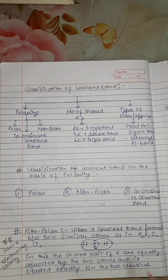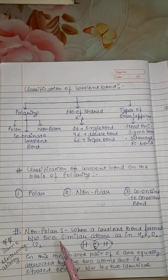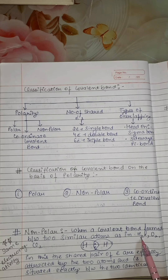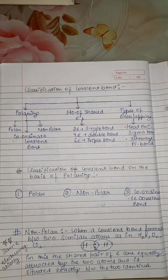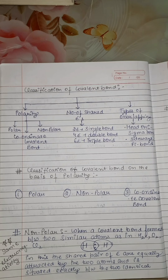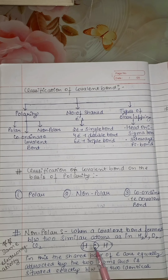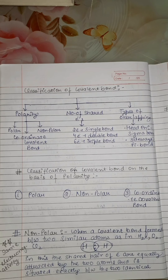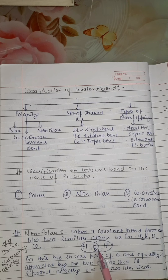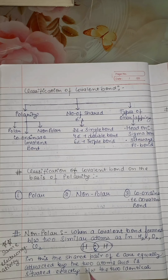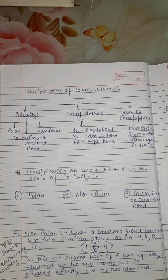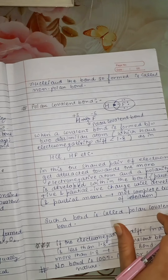Now let's study what we mean by non-polar covalent bond. Non-polar covalent bond is formed between two similar atoms — such as hydrogen, oxygen, chlorine — which have the same electronegativity. In this, the shared pair of electrons are equally attracted by the two atoms because the electronegativity is the same, and the pair is situated exactly between the two identical nuclei. The bond formed is called a non-polar bond.